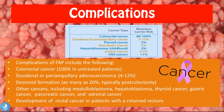The complications of FAP include colorectal cancer, which occurs in 100% of untreated patients; duodenal or periampullary adenocarcinomas, which occur in 4 to 12% of patients; and desmoid formations in as many as 20% of patients, typically post-colectomy — meaning after the colon has been resected.